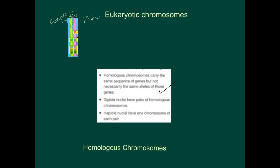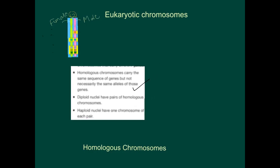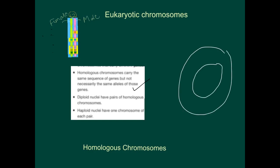Diploid nuclei have pairs of homologous chromosomes. Our cells are diploid in nature, so they have pairs of homologous chromosomes. The nucleus of a somatic cell — a diploid nucleus — has pairs of homologous chromosomes; these two together form a homologous pair.